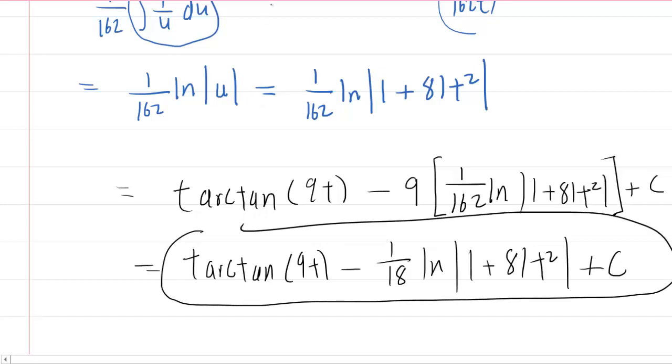A side note, technically, we won't need the absolute value, because this expression inside, 1 plus 81t squared, that's always positive. And so, you wouldn't actually need that. You could replace it with parentheses, if you wish, in this case.